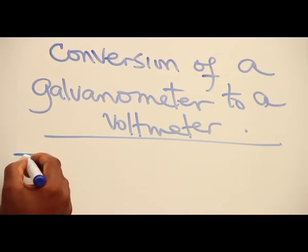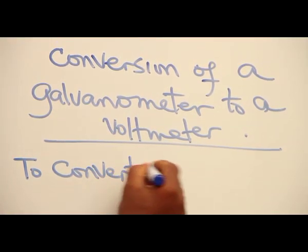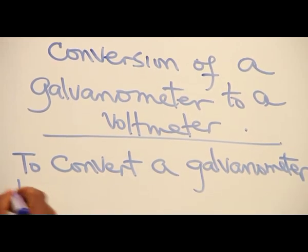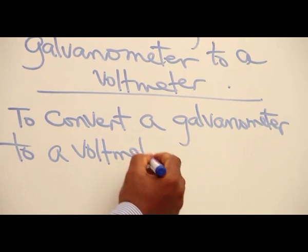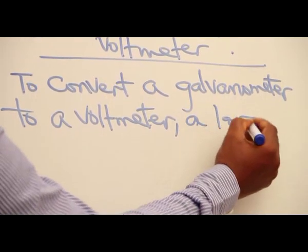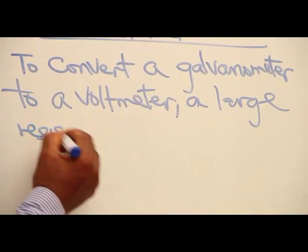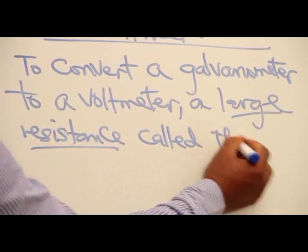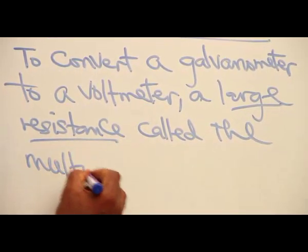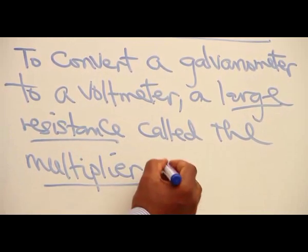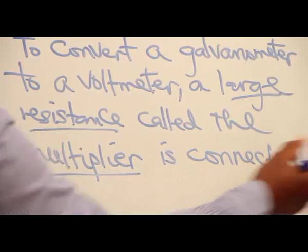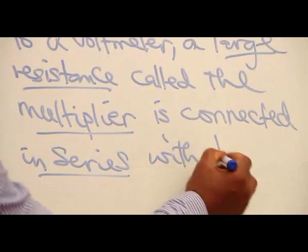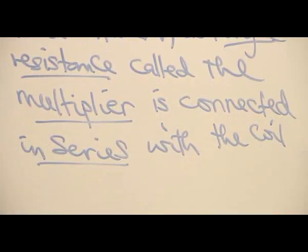To convert a galvanometer to a voltmeter, a large resistance called the multiplier is connected in series with the coil of the galvanometer.